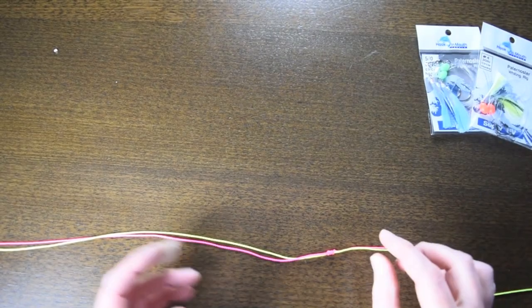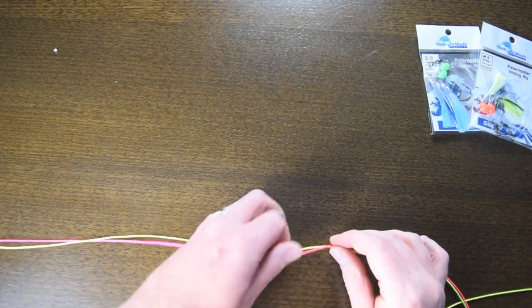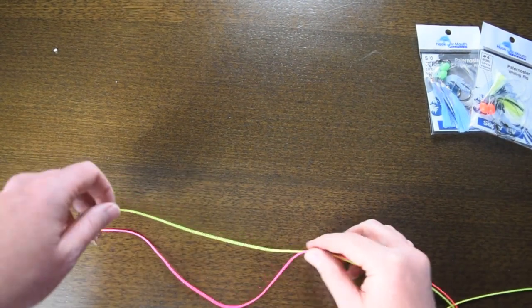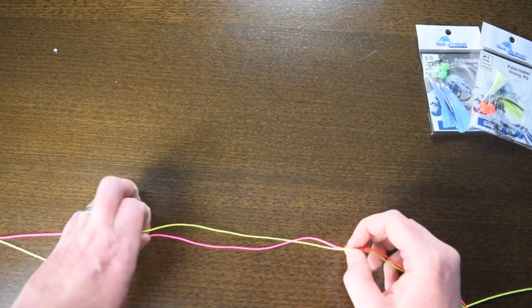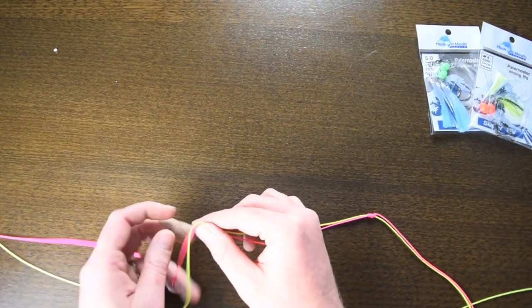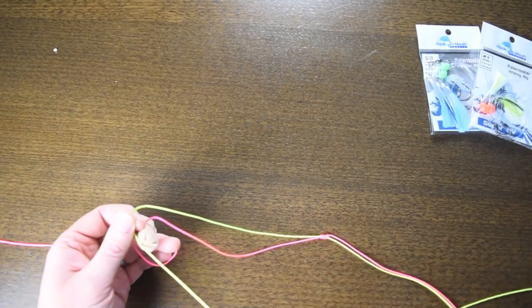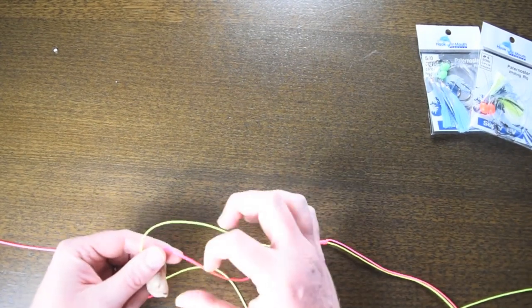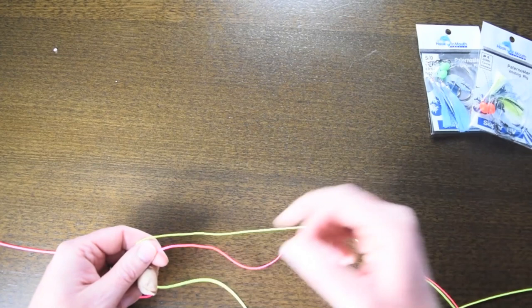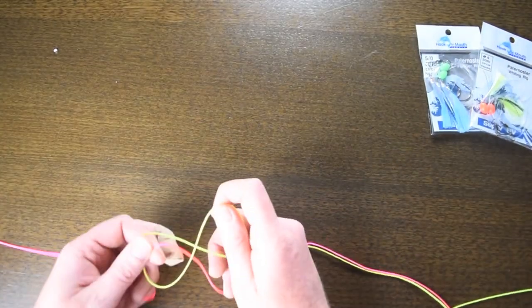Alright so basically we're going to do the same thing again but this time we're going to grab the leader and make a loop and wrap that around. Grab your leader, make your loop, then start to wrap that around, and like we did before we did five times, we're going to do the same thing again.